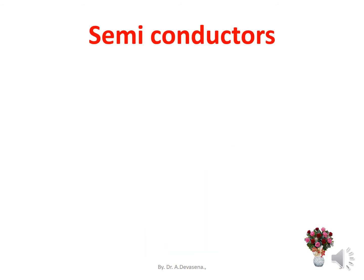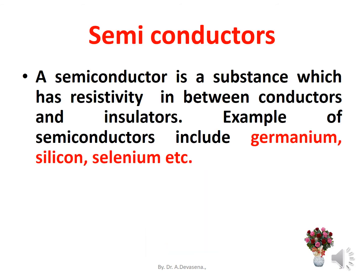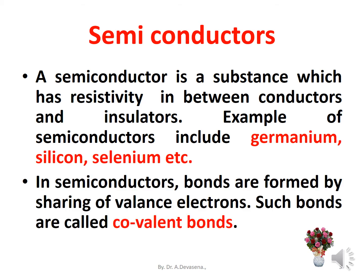A semiconductor is a substance which has resistivity in between conductors and insulators. Examples of semiconductors include germanium, silicon, selenium, etc. In semiconductors, bonds are formed by sharing of covalent electrons. Such bonds are called covalent bonds.